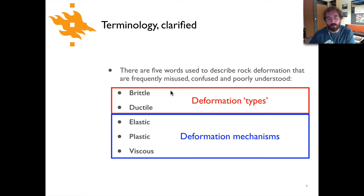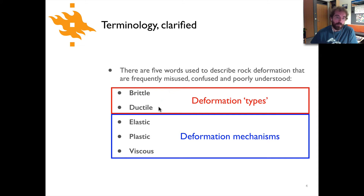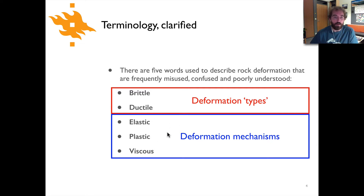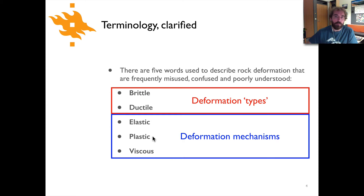Meaning we're not talking specifically about the details of how the rock is deforming by a certain deformation mechanism. We're just saying that for brittle we're at relatively cold conditions, maybe near the surface, versus ductile where we're at relatively warm conditions. That's just kind of how we would make the division, versus the deformation mechanisms which are going to be more clearly defined — in particular they'll have some sort of mathematical relationship, for instance with elasticity.